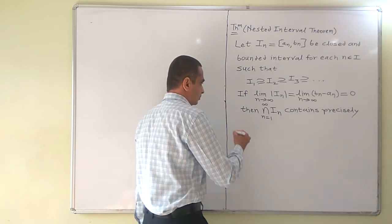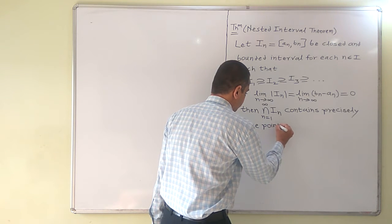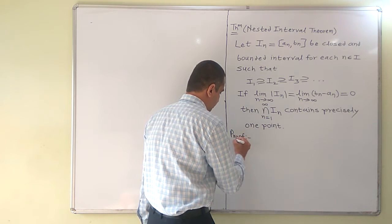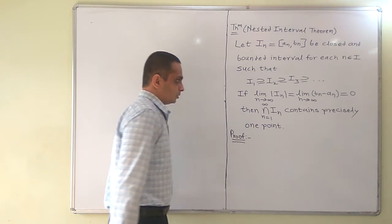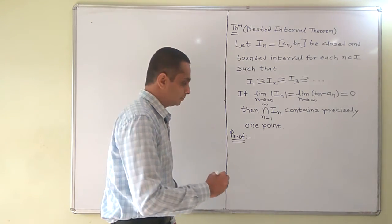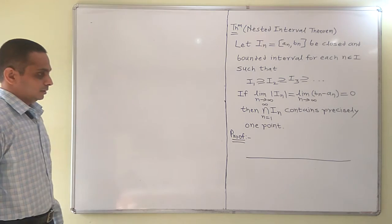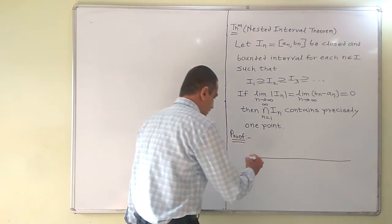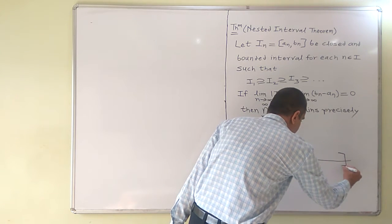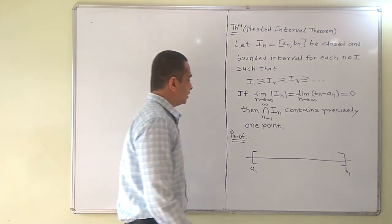It is a singleton set — that is, it contains only one point. In this theorem, we have a real line, and on it we mark a_1 and b_1, giving our first interval I_1.